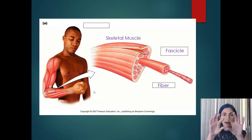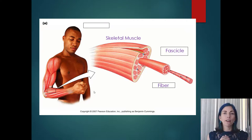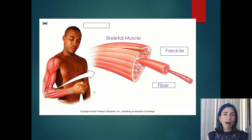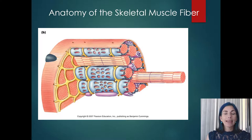Individual muscle fibers are arranged in a parallel format and bundled together to form a fascicle. A bunch of fascicles wrapped up together form a skeletal muscle organ.